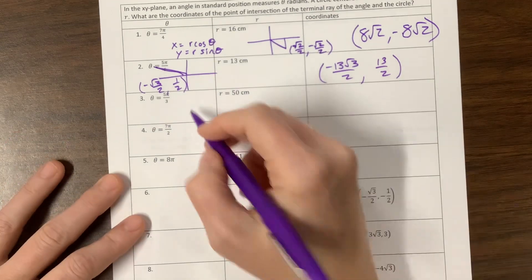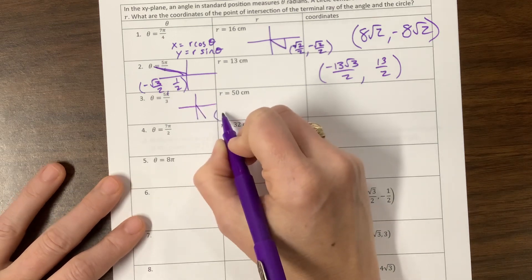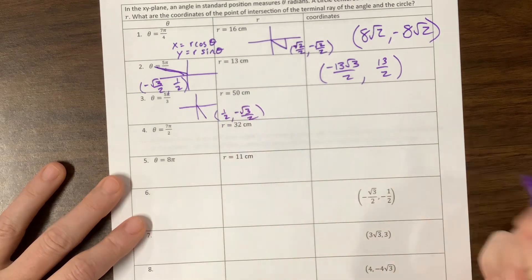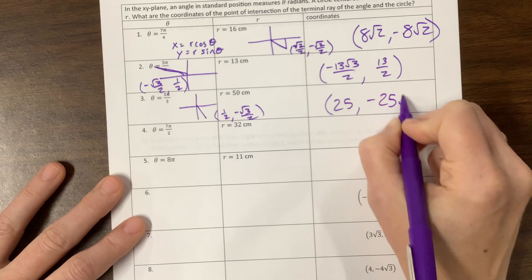That's how I would think through these. If we're looking at 5π/3, we're down here. What are my original coordinates? Positive 1/2, negative √3/2. Half of 50 is 25, so this is positive 25 and negative 25√3.